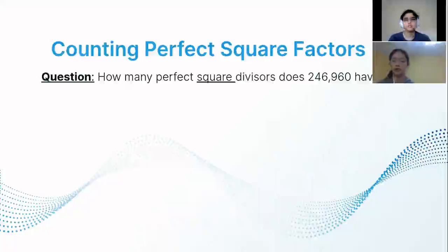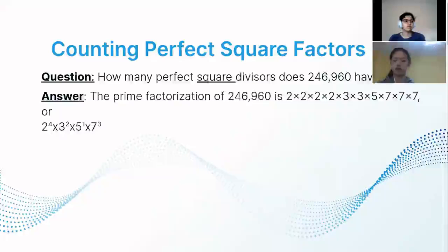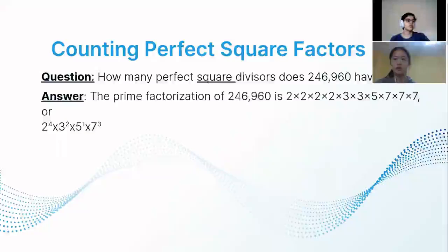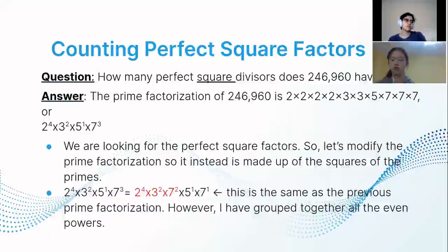Now we'll apply this strategy to counting perfect square factors. The question is: how many perfect square divisors does 246,960 have? Pause the video, find the prime factorization, and try to apply the strategy. The prime factorization of 246,960 is 2⁴ × 3² × 5 × 7³. We're looking only for perfect square factors, so we can modify our strategy. We group all the even powers, shown in red: 2⁴, 3², and 7² — because for a number to be a perfect square, all primes in its factorization must have even powers.